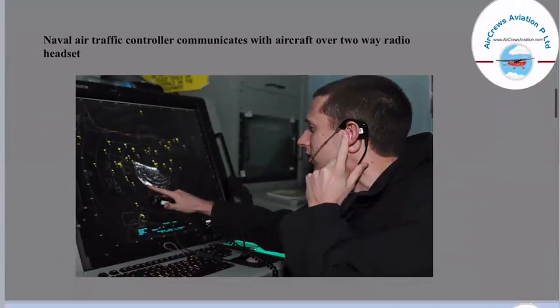This picture shows a naval air traffic controller communicating with aircraft over a two-way radio handset. Here you can see a clear picture of a handset over his ear through which he is communicating, and through the screen he is navigating the position of the aircraft.